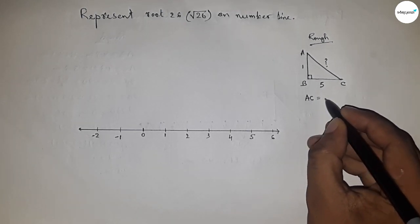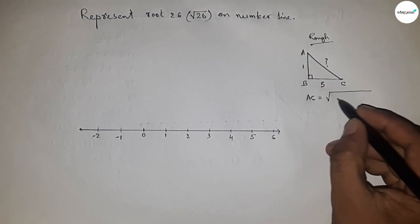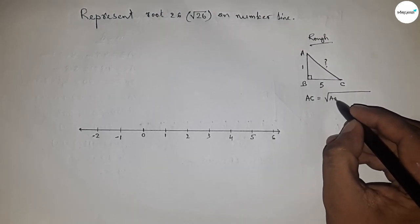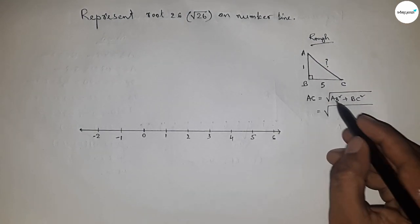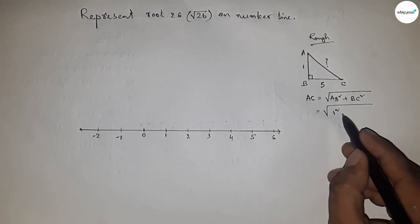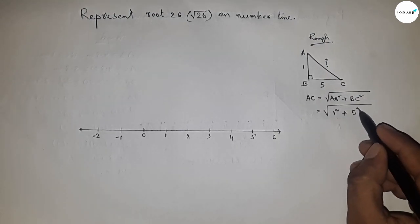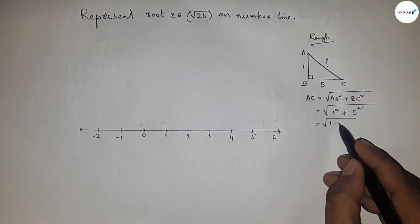Hypotenuse equals square root of base squared plus height squared. Now putting the values: this is 1, so 1 squared, plus this is 5, so 5 squared. This is 1 plus 25, so this is root 26 units.